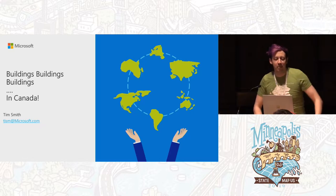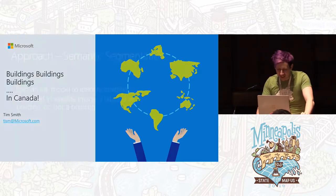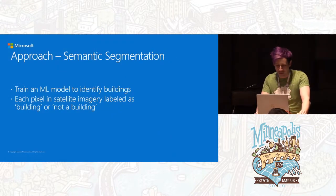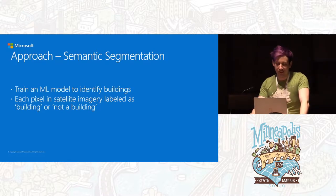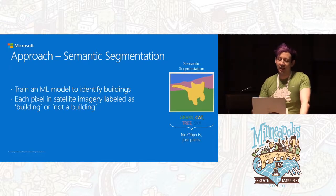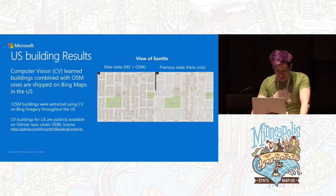Buildings, but Canada this time. A quick refresher if you're not familiar with our buildings projects: we basically took a semantic segmentation approach, looking at every pixel in the image — in this case, aerial imagery — and ultimately determining whether it's a building or not a building. We did that for the U.S. and that was great.